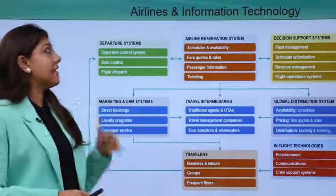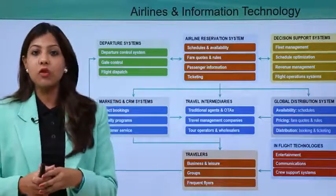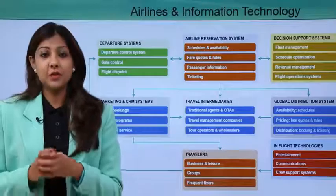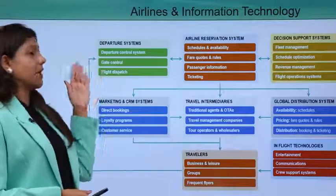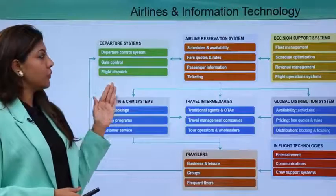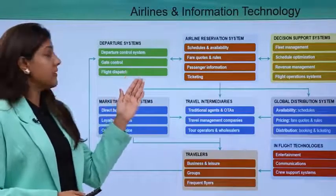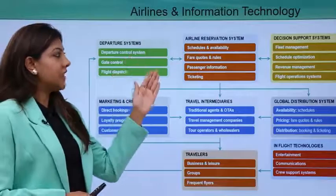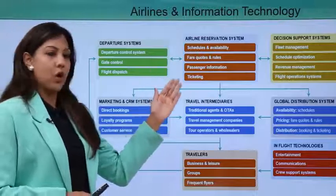Airline and information technology work very closely together because a lot of things in aviation are managed with the help of software. Under departure system we have departure control system, gate control, and flight dispatch. Under airline reservation system we have schedules and availability, fare codes and rules, and passenger information, as well as ticketing. Under decision support system we have fleet management, schedule optimization, revenue management, and flight operation system.